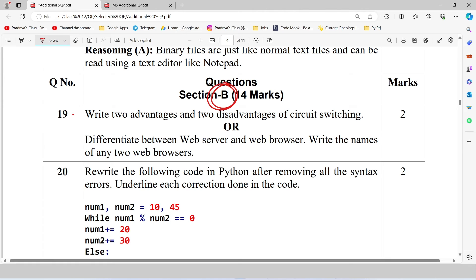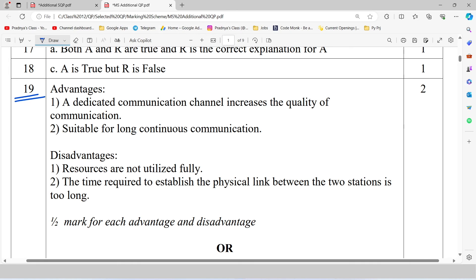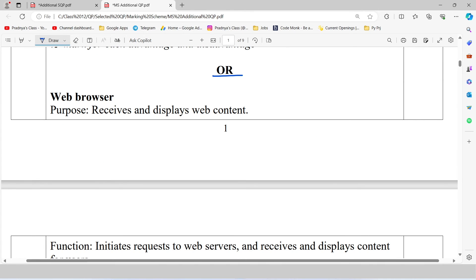Here is the second question. Dash protocol provides access to services hosted on a remote computer. For that purpose we use telnet. So the correct option is C. Let's move ahead to section B. Here is the first question from section B. Write two advantages and two disadvantages of circuit switching. There is an OR part too. Here we need to tell the difference between web server and web browser, along with that we have to tell the name of two browsers. Look at the answer. In case of circuit switching we will have a dedicated communication channel, which increases the quality of the communication. It is suitable for long continuous communication. Then what about disadvantages? In case of circuit switching, resources are not utilized fully. Here is the second disadvantage. The time required to establish a physical link between two stations is too long.